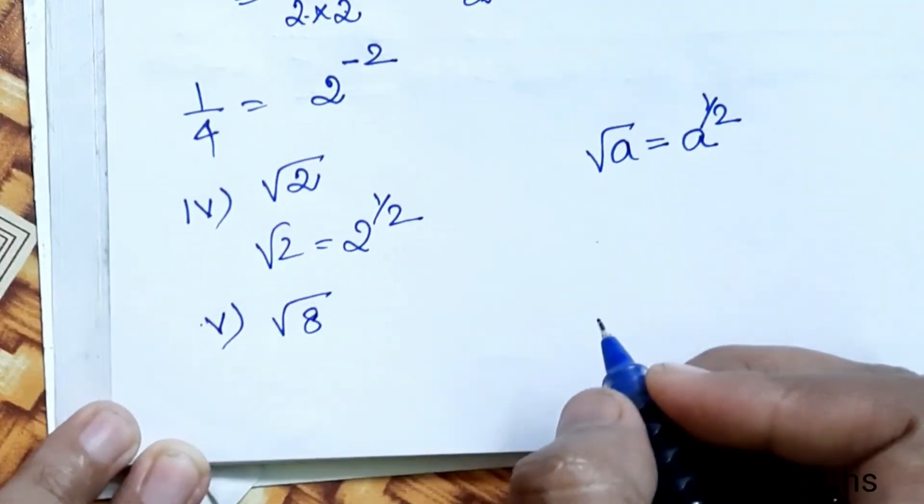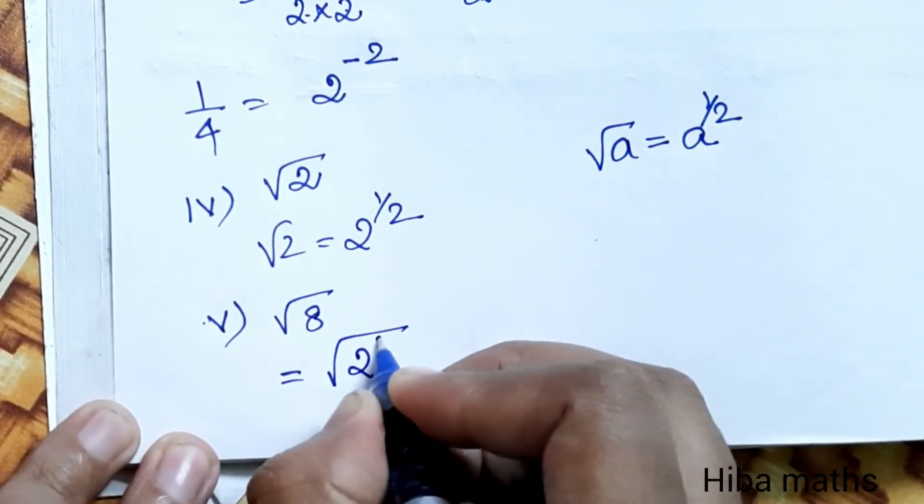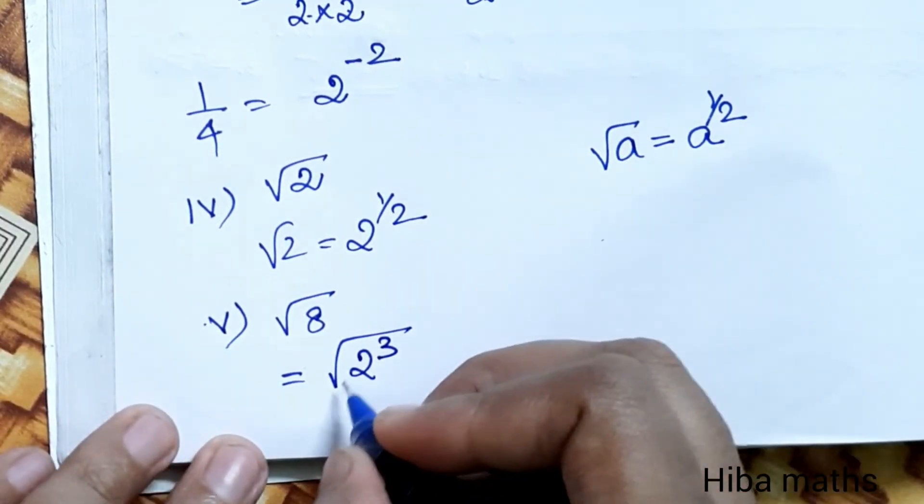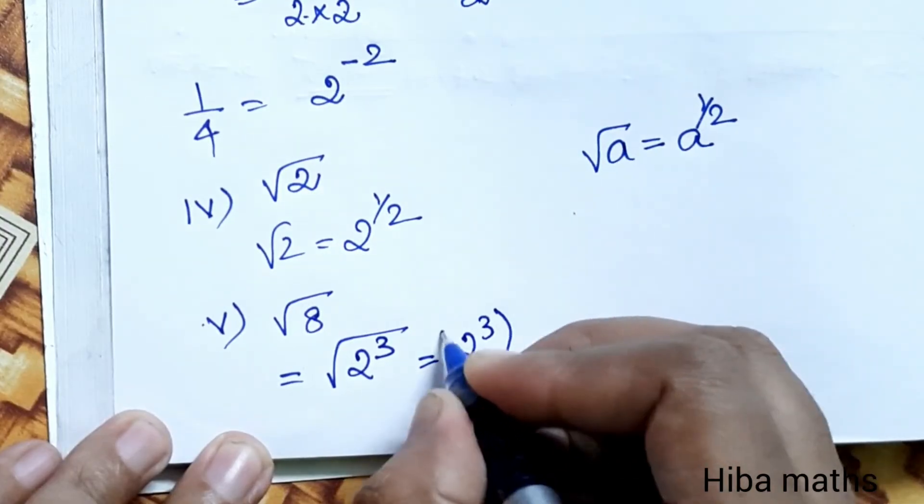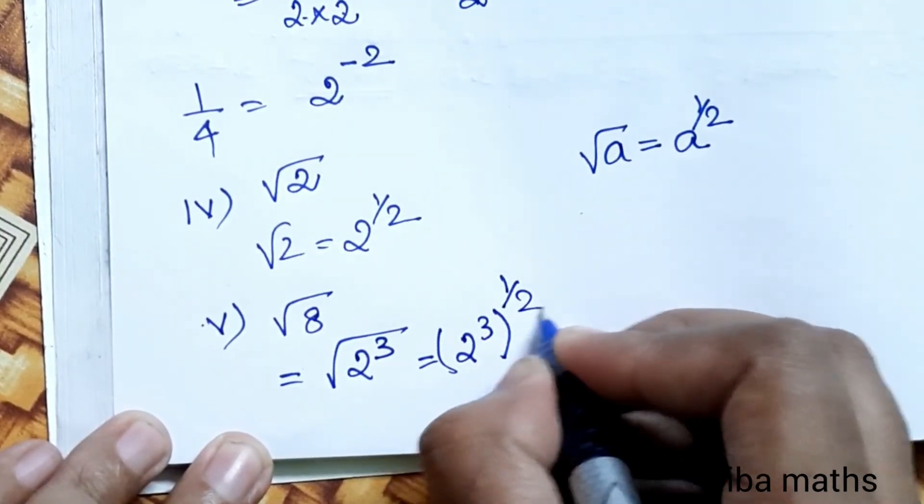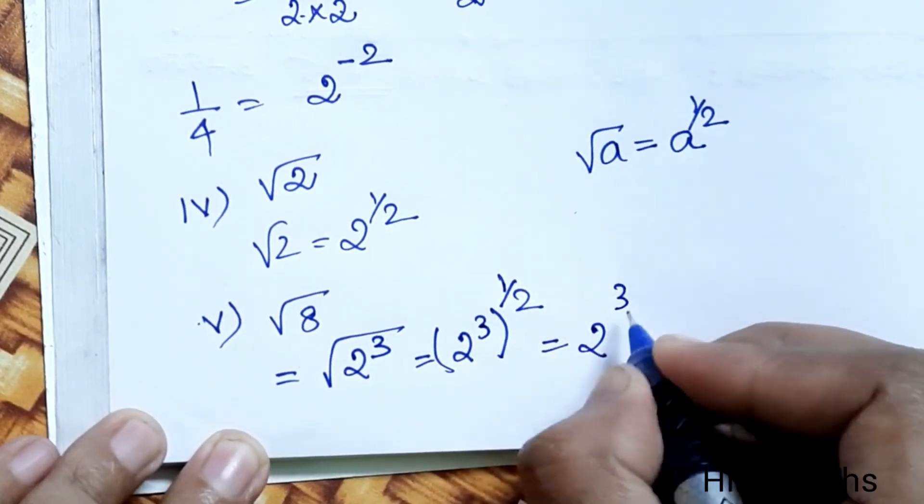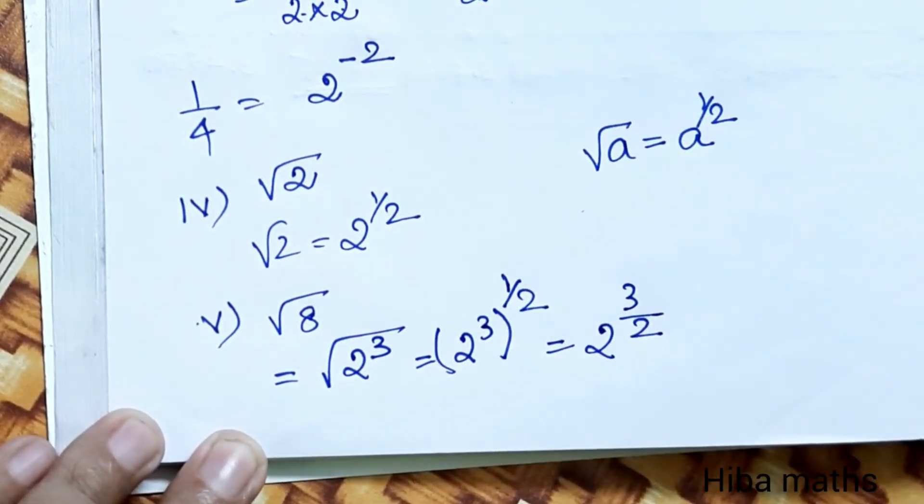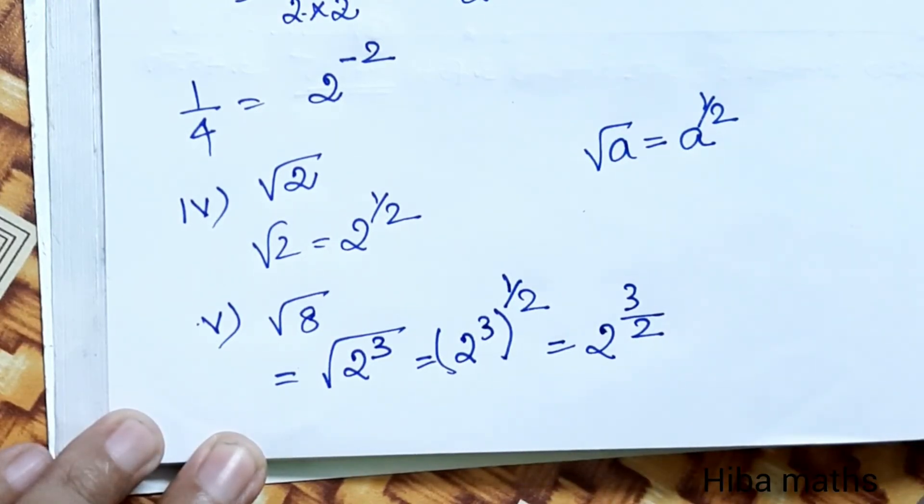Fifth question: √8. From the first problem, 8 = 2^3. Now the root means raising to power 1/2. So √8 = (2^3)^(1/2) = 2^(3/2). If you have any doubts, leave a comment. Subscribe to our channel. Thank you for watching.